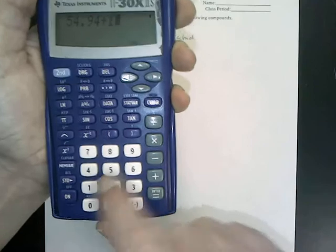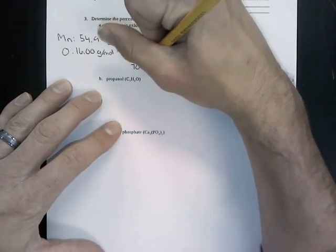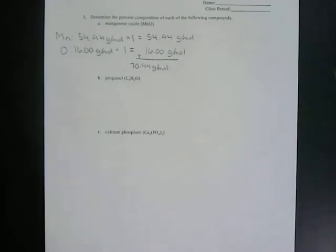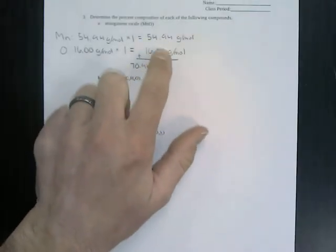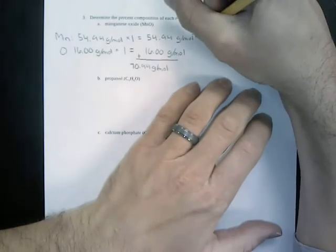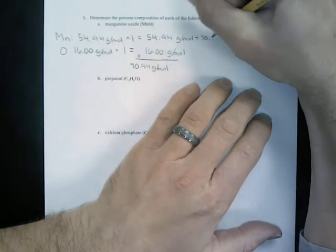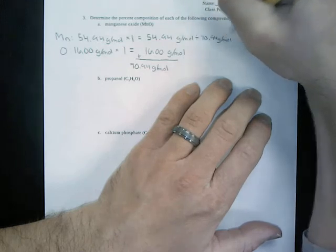We add both values together: 54.94 plus 16.00 gives us a total molar mass of 70.94 grams per mole for manganese oxide. To find the percent composition of each element, we use this total molar mass and divide each element's contribution by it, then multiply by 100 at the very end. So we divide by 70.94 grams per mole, then multiply by 100.